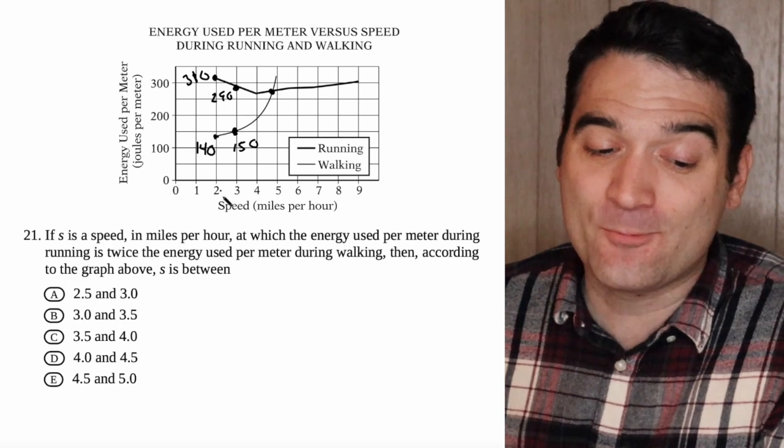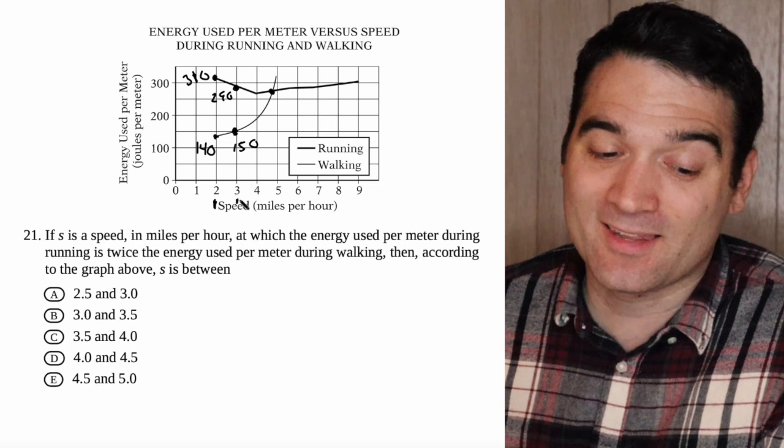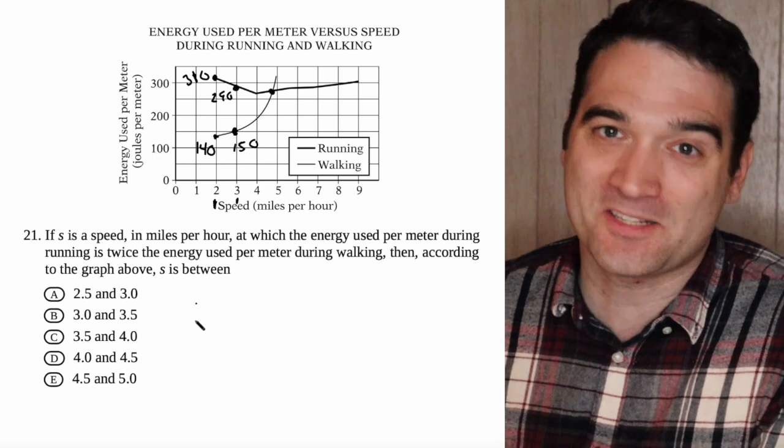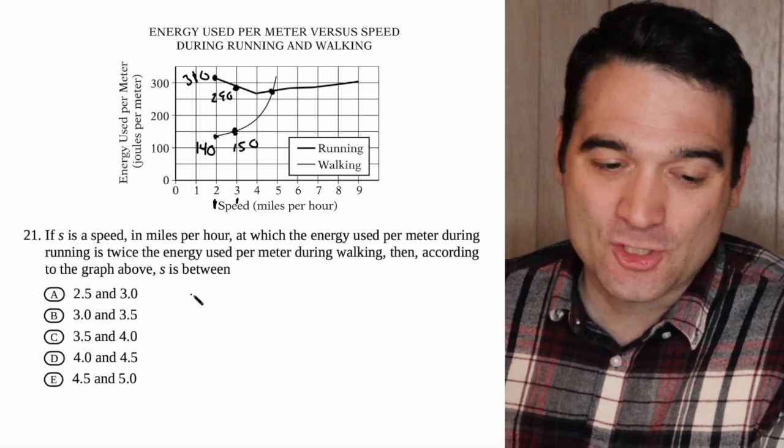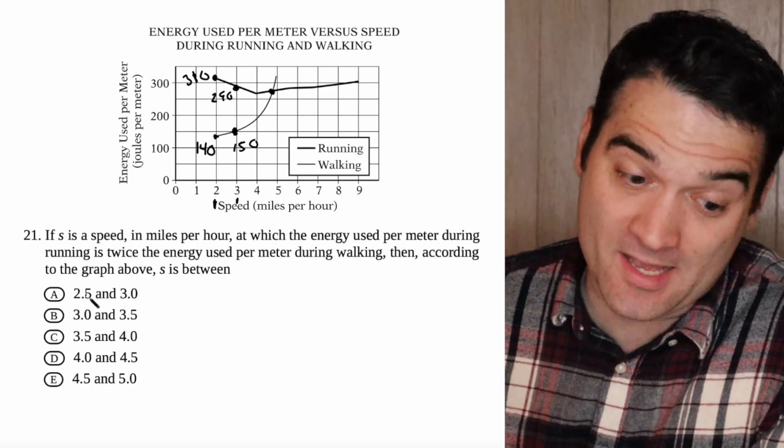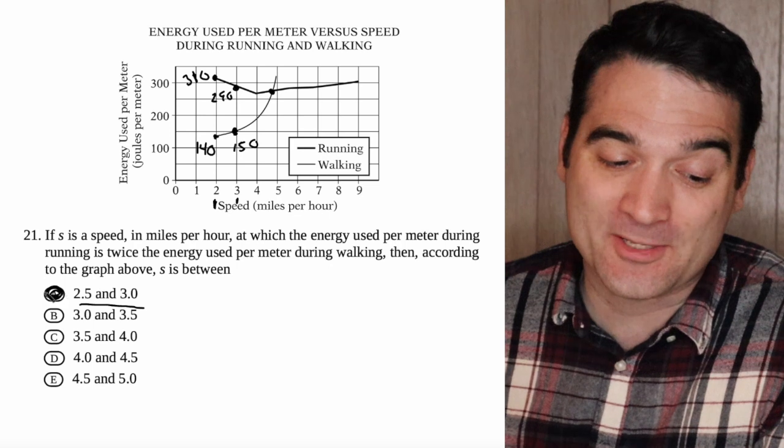So if I was using more than 2 times as much at time 2 and less than 2 times as much at time 3, somewhere in here, I must have crossed that threshold. So that means that it occurred somewhere between 2 and 3, but that's not an option. So it has to be between 2.5 and 3.0. Correct answer here is A.